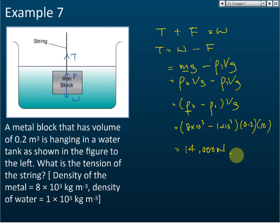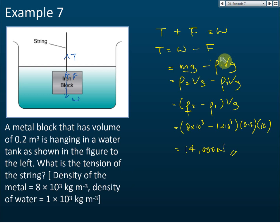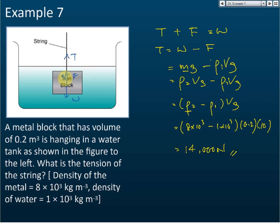The answer is 14,000 Newtons. For these types of questions, you must know the forces acting on the object and their relationship: tension plus upthrust equals weight. You need to know how to find upthrust (F = ρVg) and weight (also ρVg), but for weight use the density of the material, and for upthrust use the density of the liquid. The volume of displaced water equals the volume of the block only when it is fully immersed.